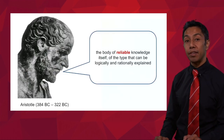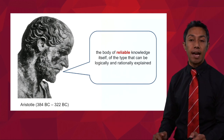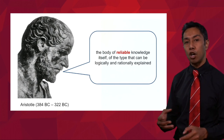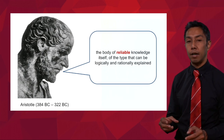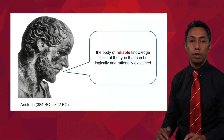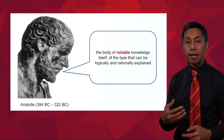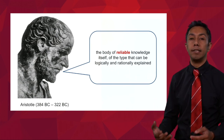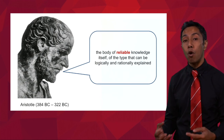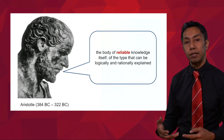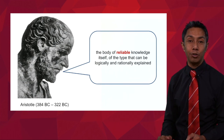When we look at other definitions — for example, those provided by Aristotle — he defined science as the body of reliable knowledge itself, of the type that can be logically and rationally explained. If you ask people on the street how they would define science, this is pretty much how most people would define it: science is a series of textbooks or science is knowledge. There's nothing wrong with that definition, but through this course we'd like to expand your definition of what constitutes science.